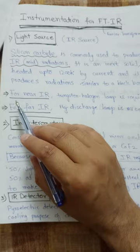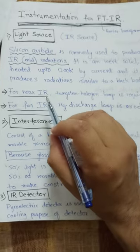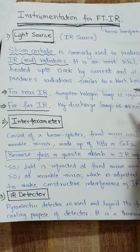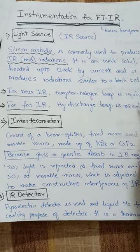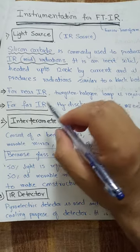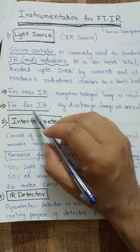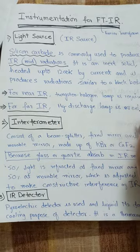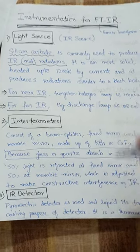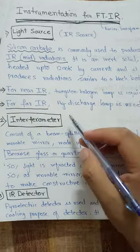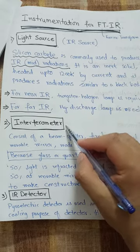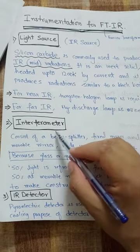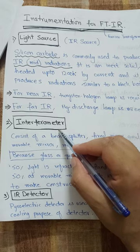For the near-infrared region we use a tungsten halogen lamp, and for the far-IR region a mercury discharge lamp is used. The second most important component of the IR spectrophotometer is the interferometer.